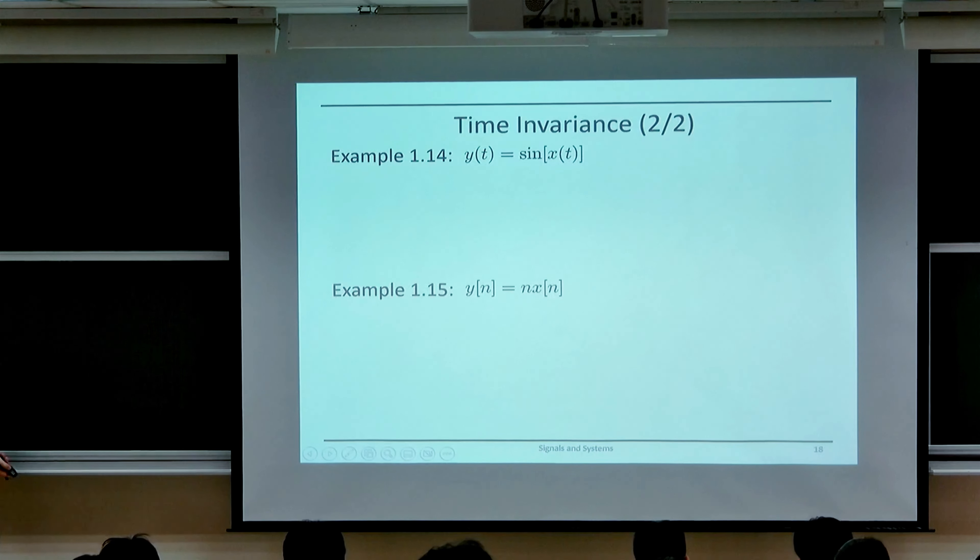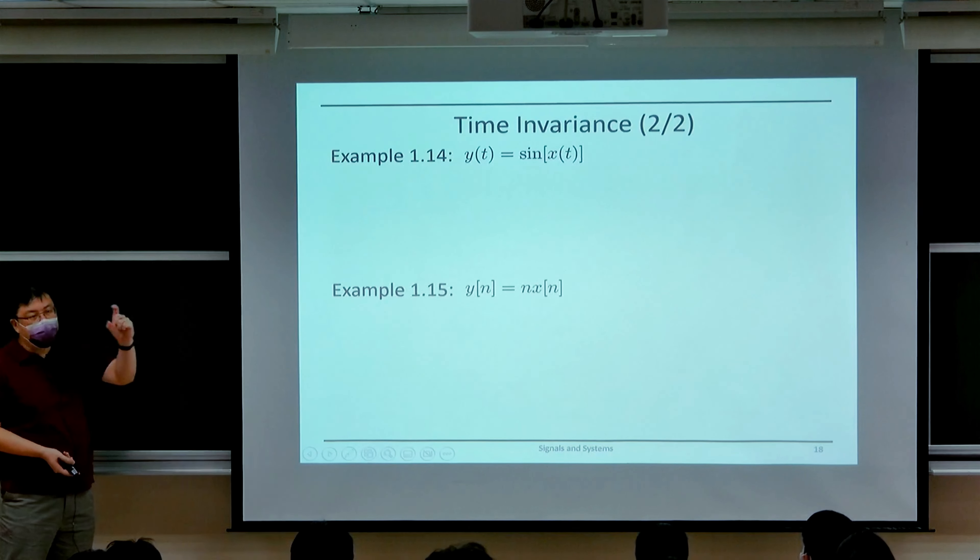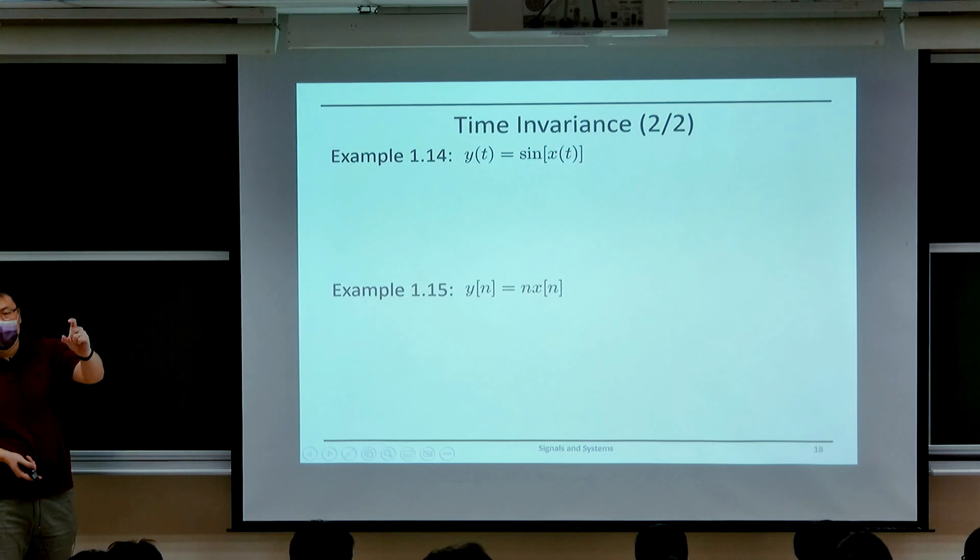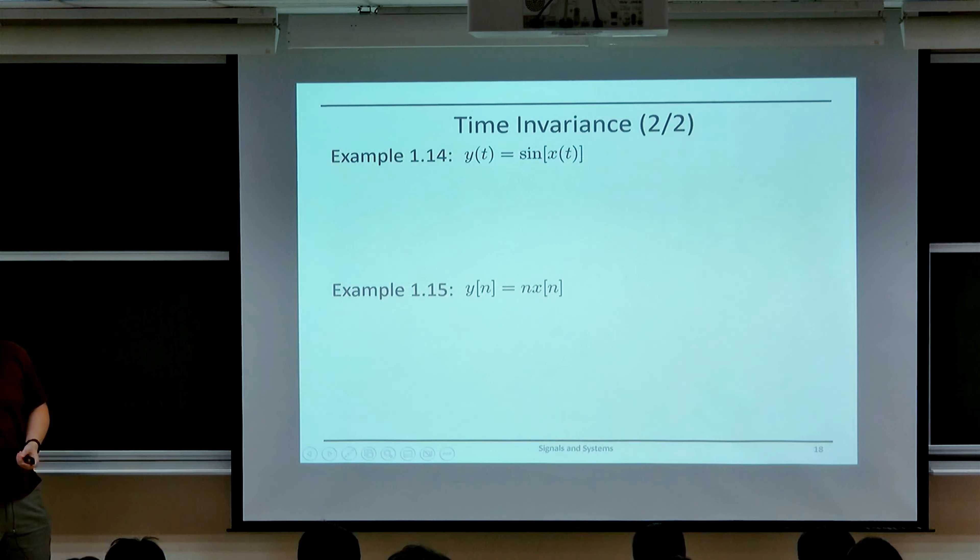To show that it is time invariant or time varying, you need to show that if you are given the same input tau seconds later, you have to see if the output would remain the same just with the same tau time shift.